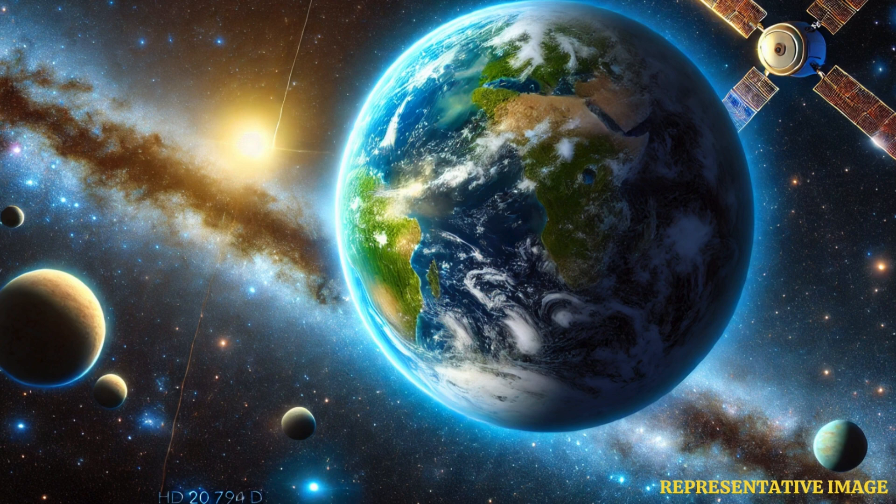HD 2794D, the new super-Earth, has a mass six times that of Earth. It completes one orbit around its star in 647 days. This puts it in the habitable zone, as it is only about 40 days less than Mars' orbit around the sun.